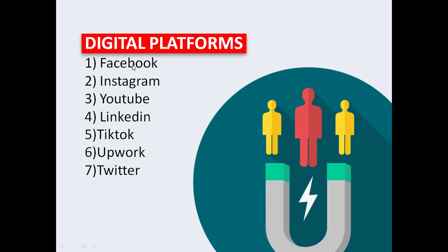On Facebook you can put up written content or video content, same with Instagram, LinkedIn, and Twitter. But on TikTok and YouTube, you only have the option to put out video content — though YouTube recently rolled out the podcast option as well. With written content, you make people buy your product or services by creating copies about your products and redirecting them to buy. On these platforms, you have a content strategy where at the end of every content you create there is a call to action that redirects them to buy a product of yours. Every content you put out on social media should have the purpose of making a sale.